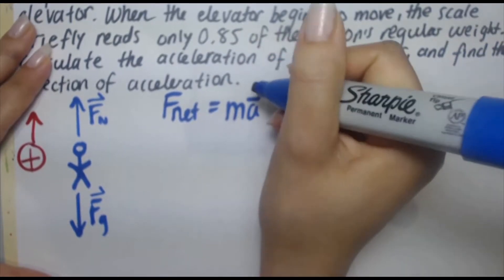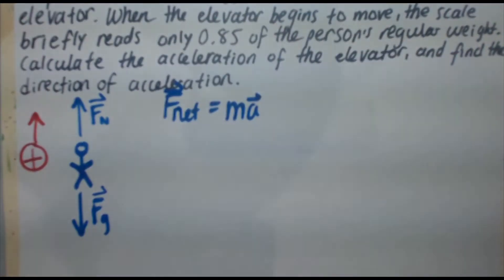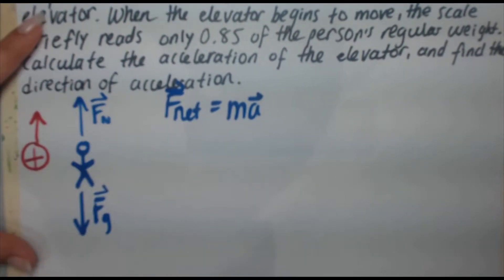This will solve most problems that are like this. Whenever you draw a free body diagram with your forces, this is usually the next step, F_net equals ma. Now make sure you keep those vector symbols on top of the net force and the acceleration because they are vectors.